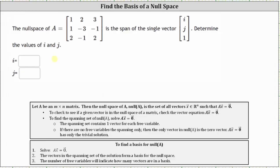To find a basis for the null space, we solve the equation A times vector x equals zero. The vectors in the spanning set of the solution form a basis for the null space. The number of free variables will indicate how many vectors are in a basis, and since we're told a single vector spans the null space, we should only have one free variable.